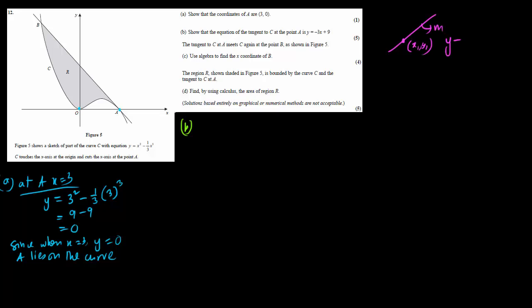The equation of a line is y minus y1 equals m times (x minus x1). In the case of a tangent to the curve, the gradient is the same as the gradient of the curve at that particular point, known as dy/dx.